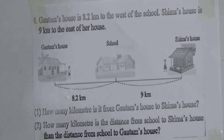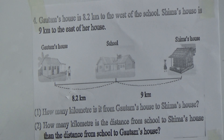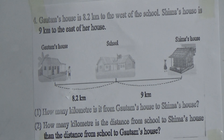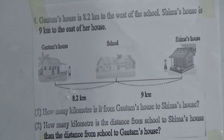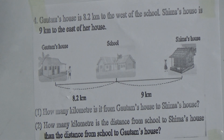Now see question number one, sub number one: how many kilometers is it from Gautam's house to Shima's house? That means what is the total distance between Gautam's house and Shima's house? And question number two: how many kilometers is the distance from school to Shima's house more than the distance from school to Gautam's house? That means what is the difference? I hope you understood the questions. Now I will solve them one by one.